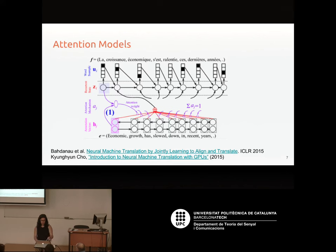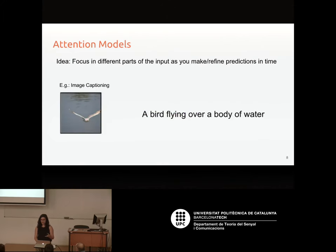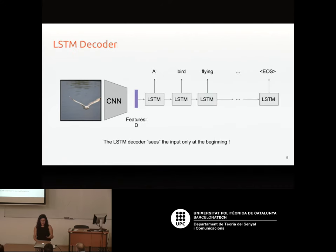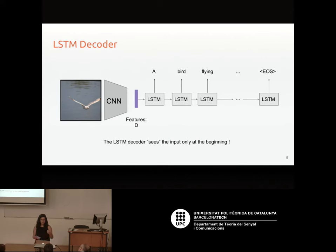This is for text, but we want to do this for images. Image captioning is basically translation where the input is not a sentence but an image, and you translate that into a sentence. The same problem exists: you encode the image into a single representation, initialize the LSTM, and the LSTM predicts a sentence. But the LSTM only sees the image once and the representation never changes — it encodes the whole image.